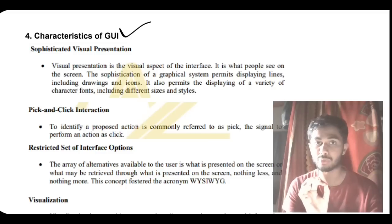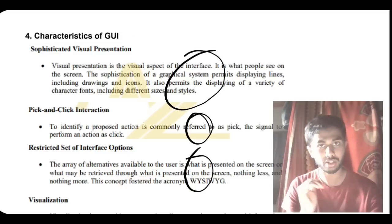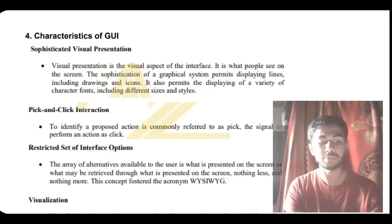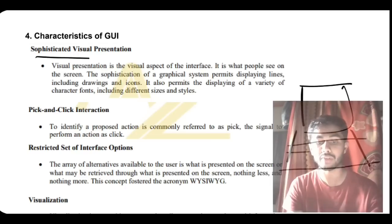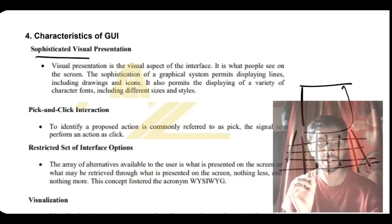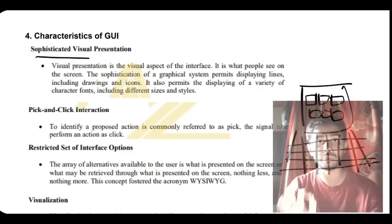The fourth super important question is characteristics of GUI. Just read the key points and write in your own words. The first characteristic is sophisticated visual presentation — a very nice interface. For example, when you open your laptop you can see nicely arranged icons on the screen. The second is pick-and-click interaction — clicking on items to interact with them.